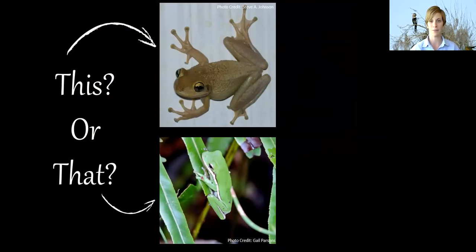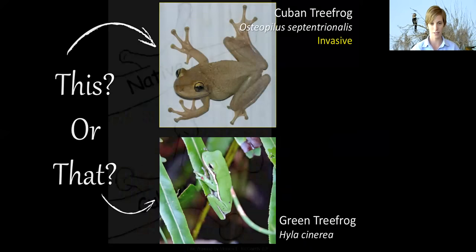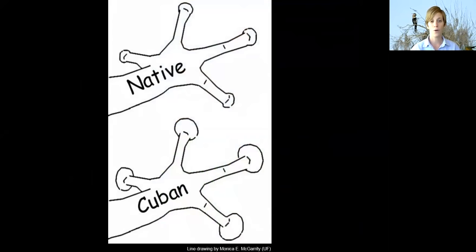Now we're going to switch gears to look at some amphibians. On the top we have the Cuban tree frog versus the green tree frog on the bottom. The Cuban tree frog is an invasive species, so it's important to properly identify it. One thing to look for — and this applies to all native tree frogs compared to the Cuban tree frog — is the size of the toe pads. On a native tree frog they're much smaller compared to the very large toe pads of the Cuban tree frog.